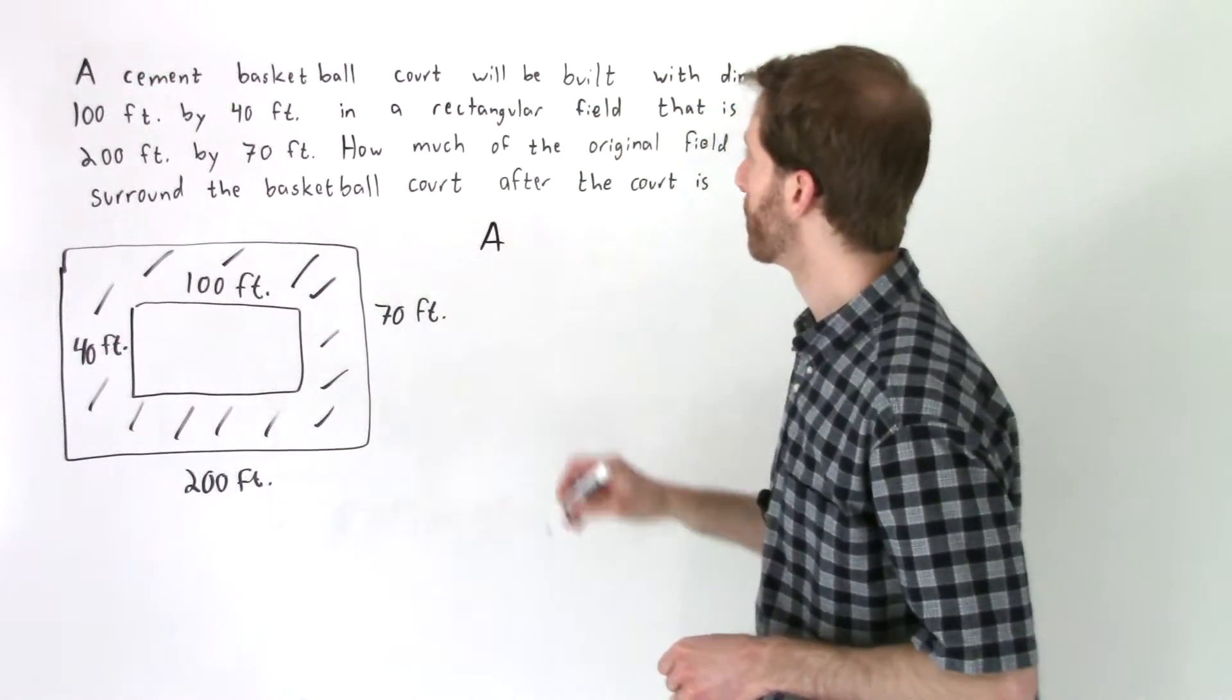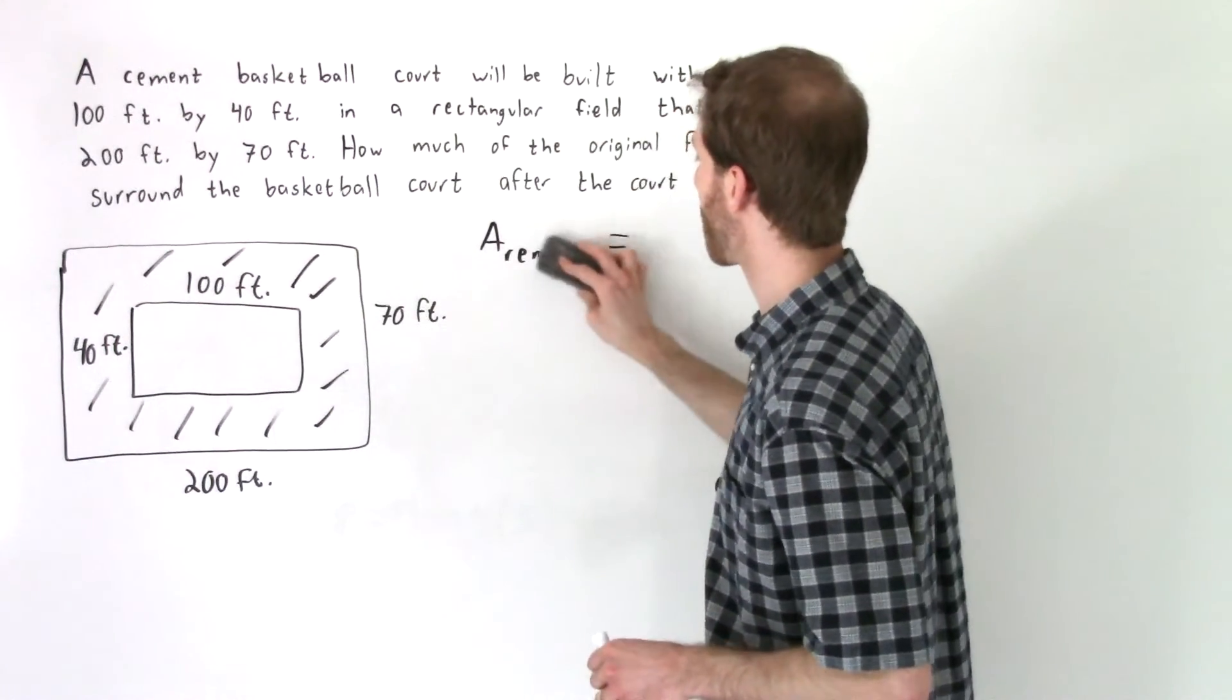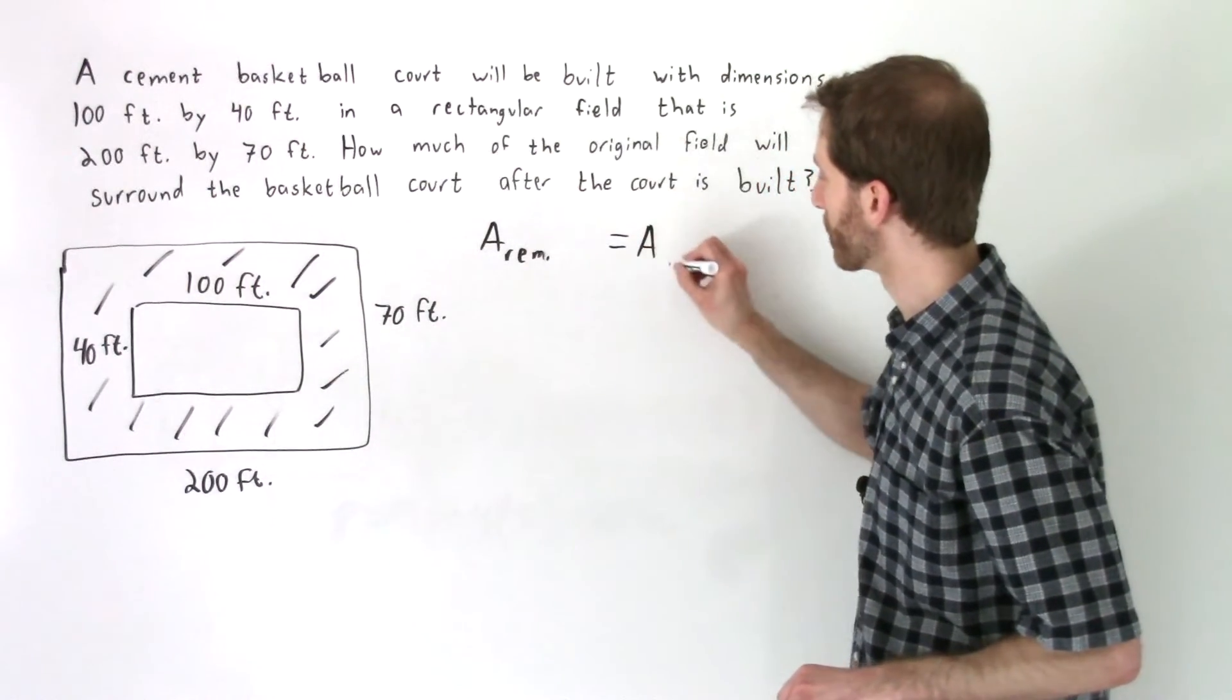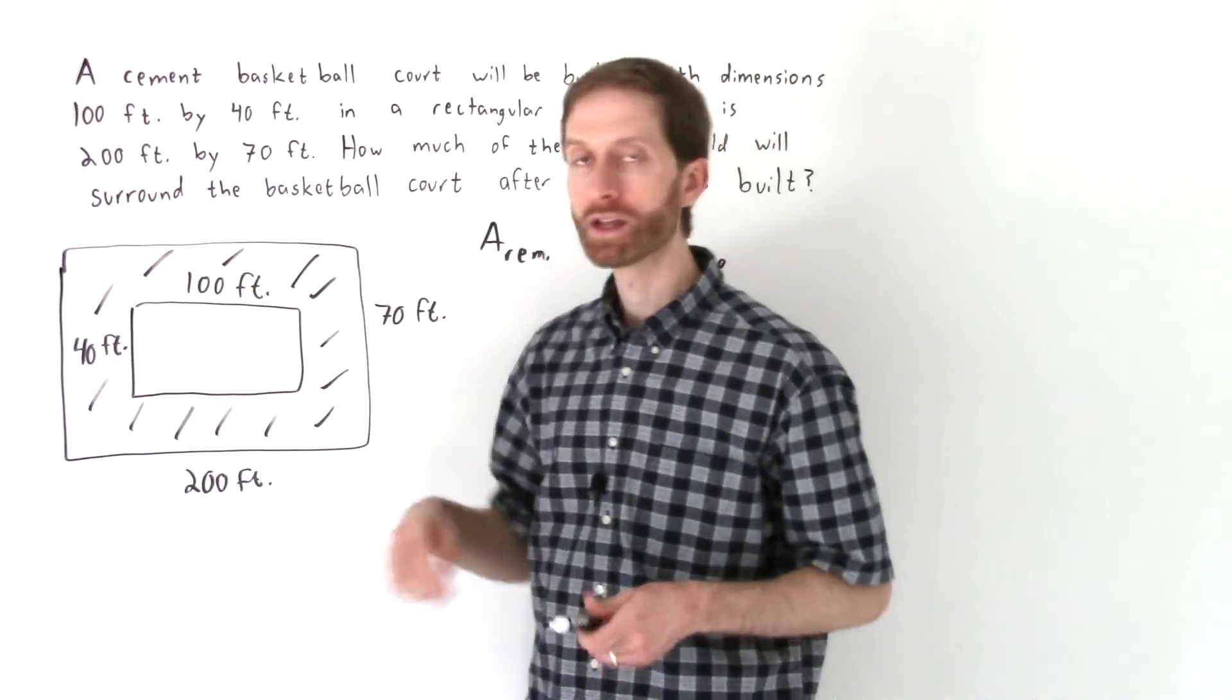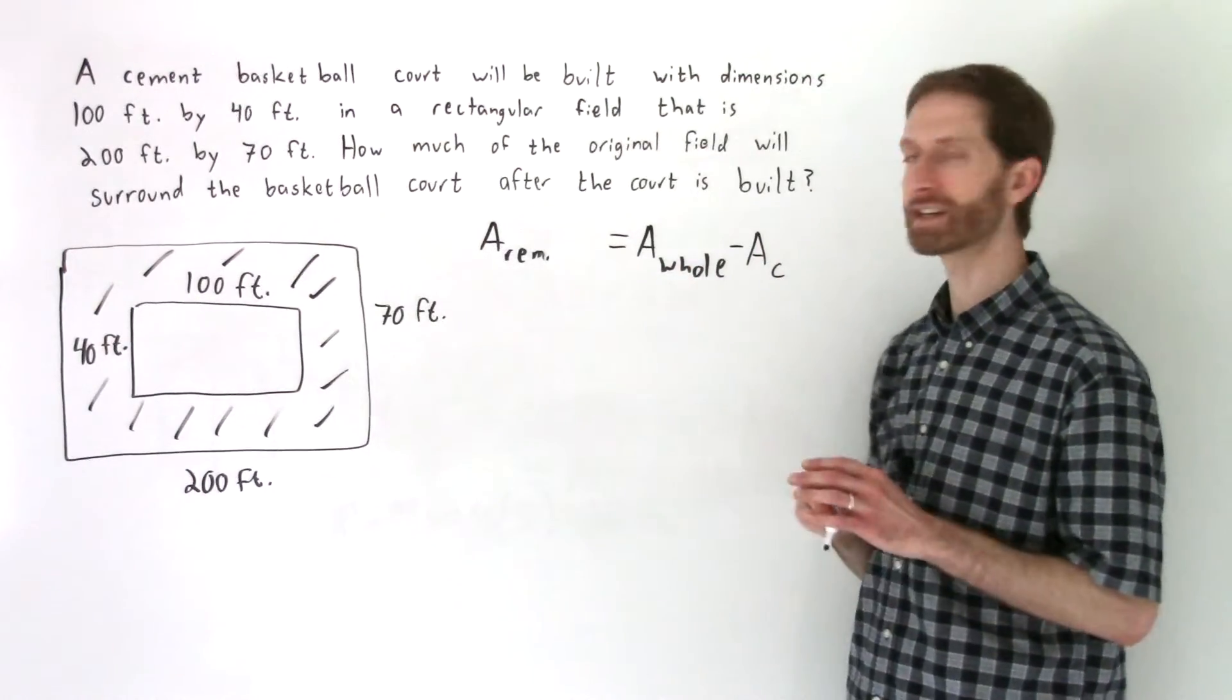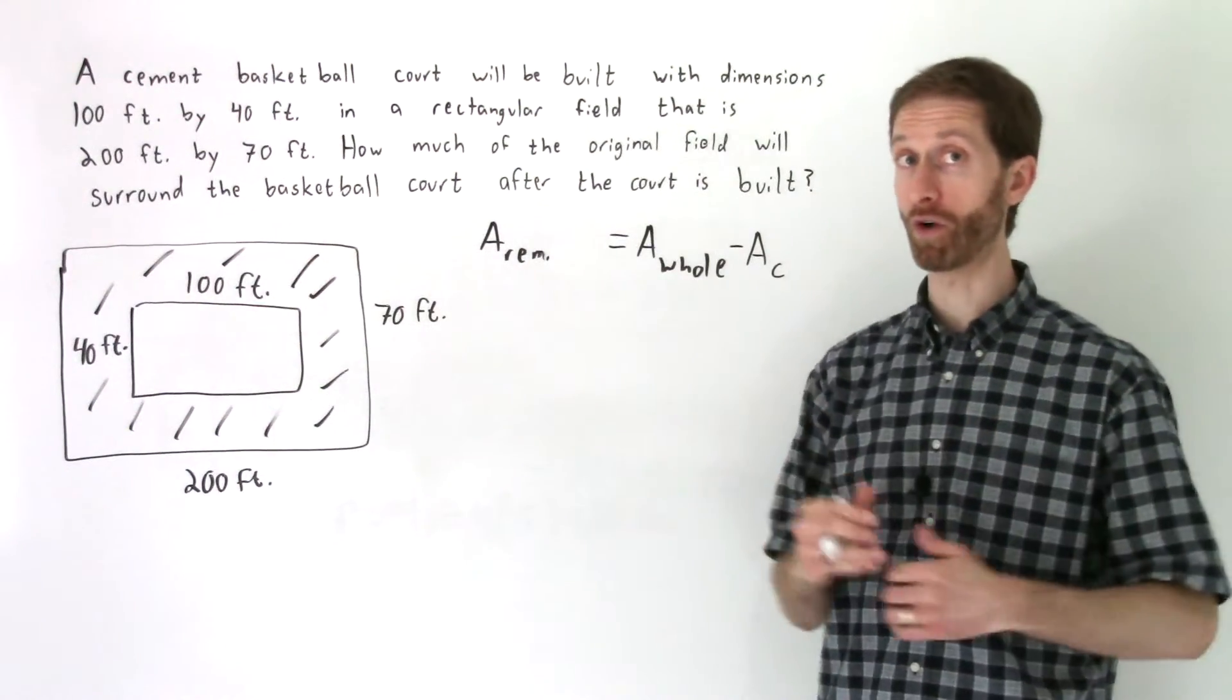Let's think about this in a more general, simple way. The area remaining is equal to the area of the whole field, and then if we subtract from that the area that we've covered, we'll have the remaining amount. So we're going to subtract out the area of the court. These things just designate the whole area, the court area, and then the remaining area. Now all we have to do is find the area of each of these and then evaluate it into our simple overall idea.